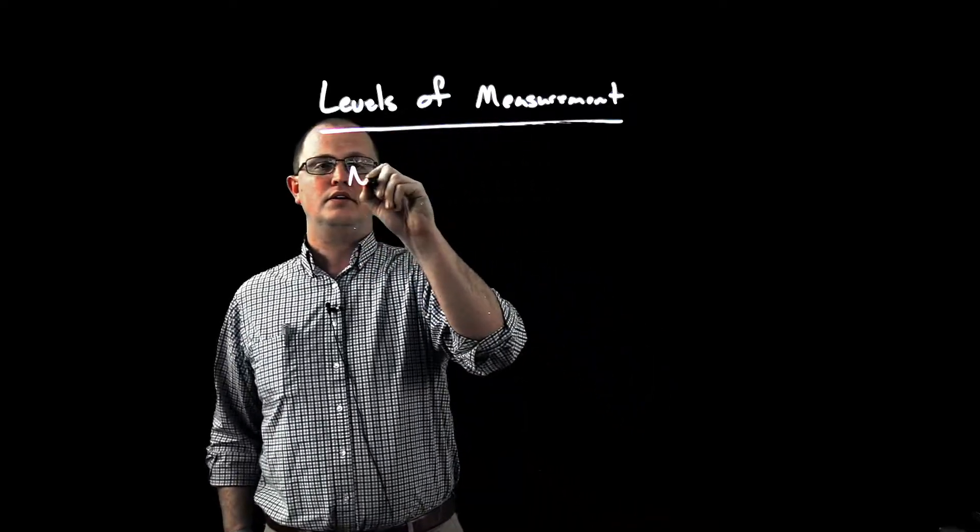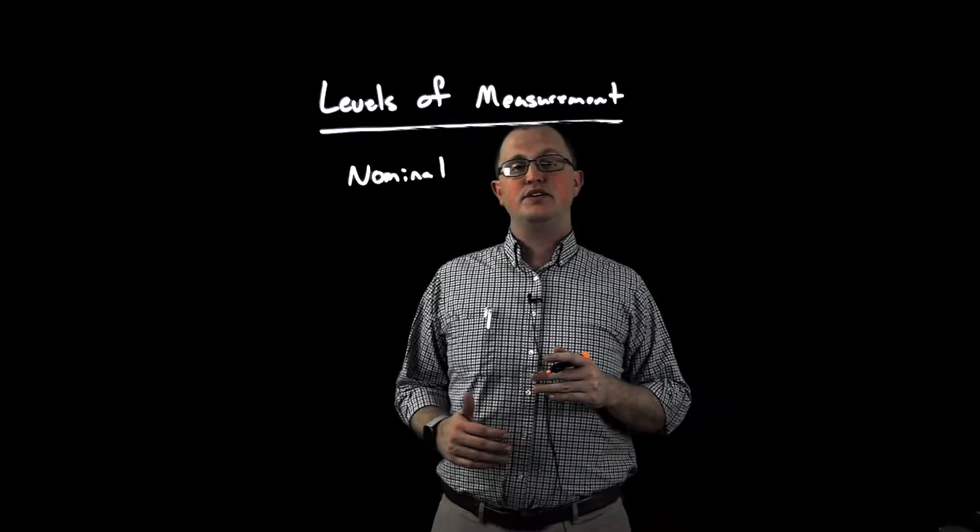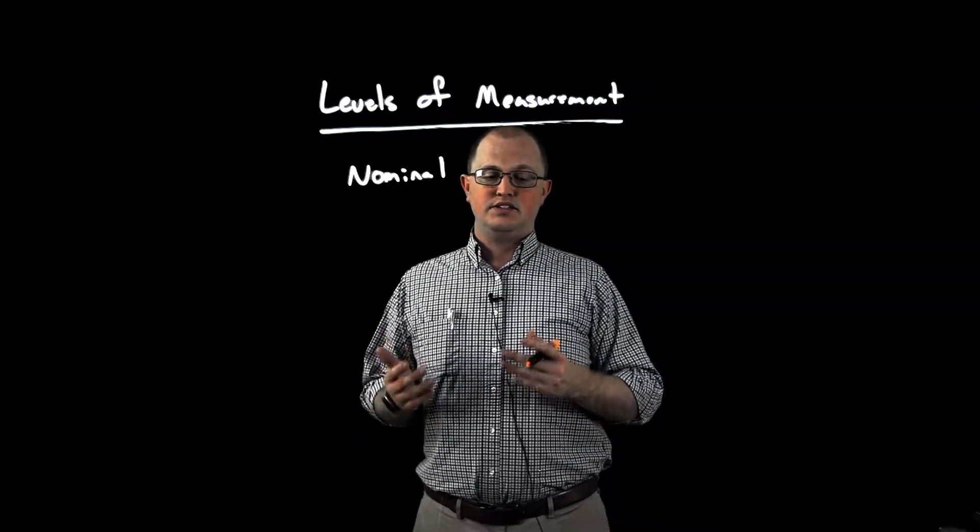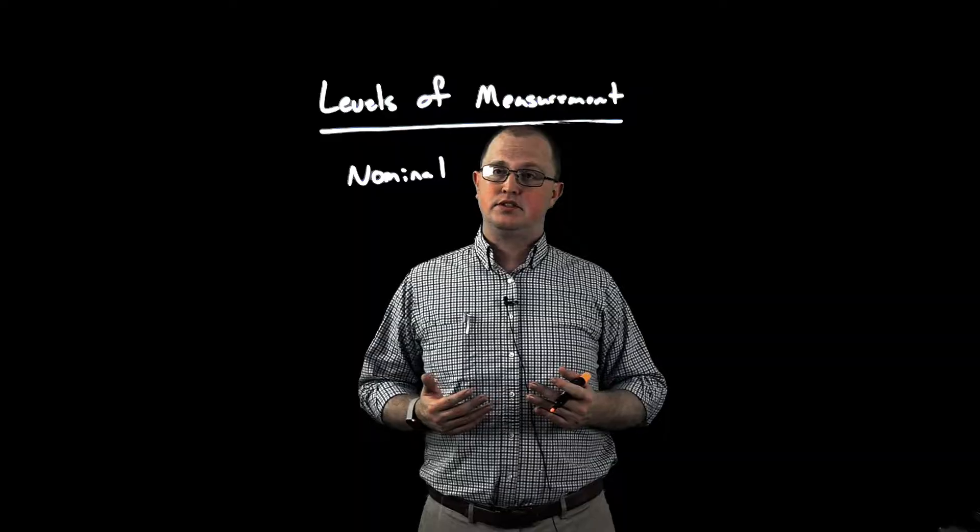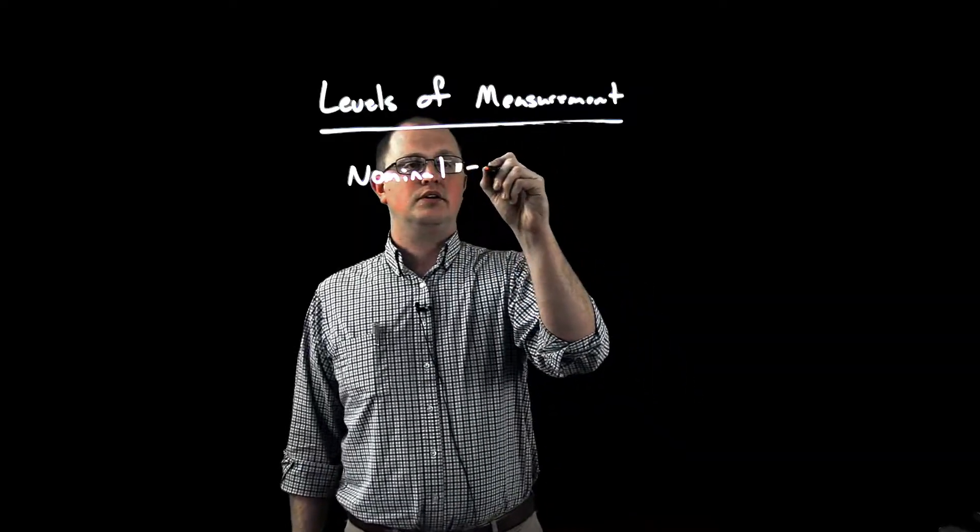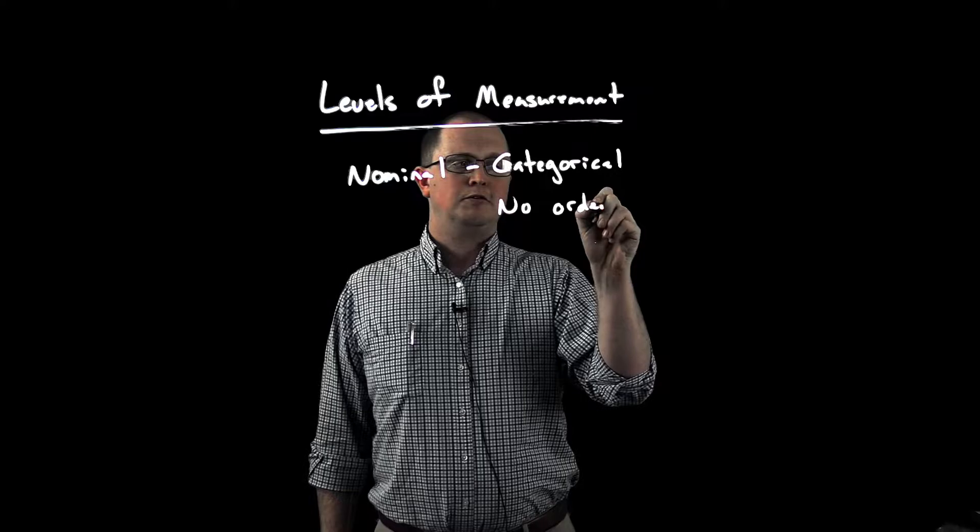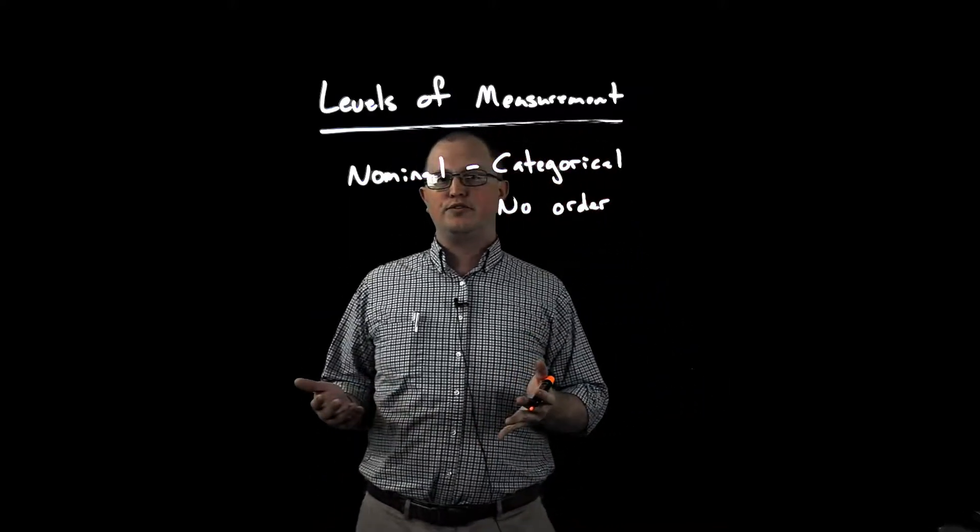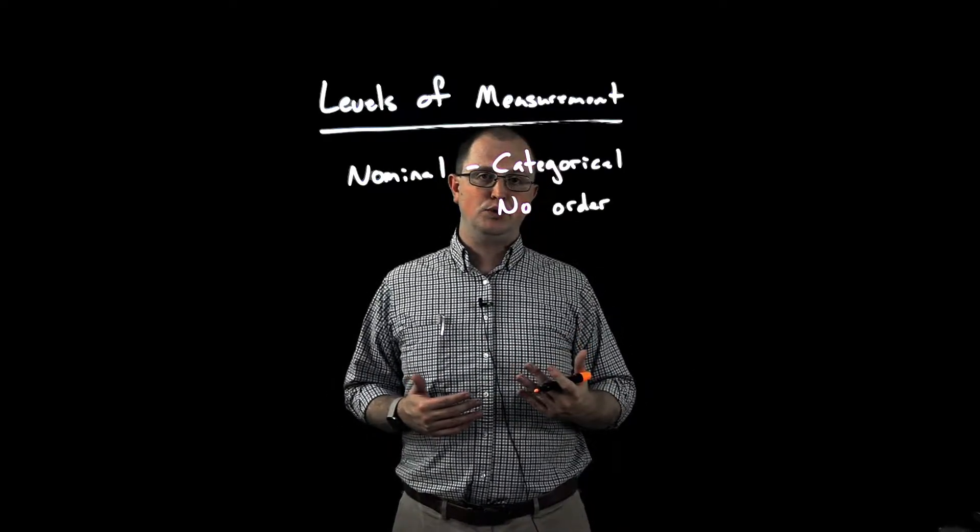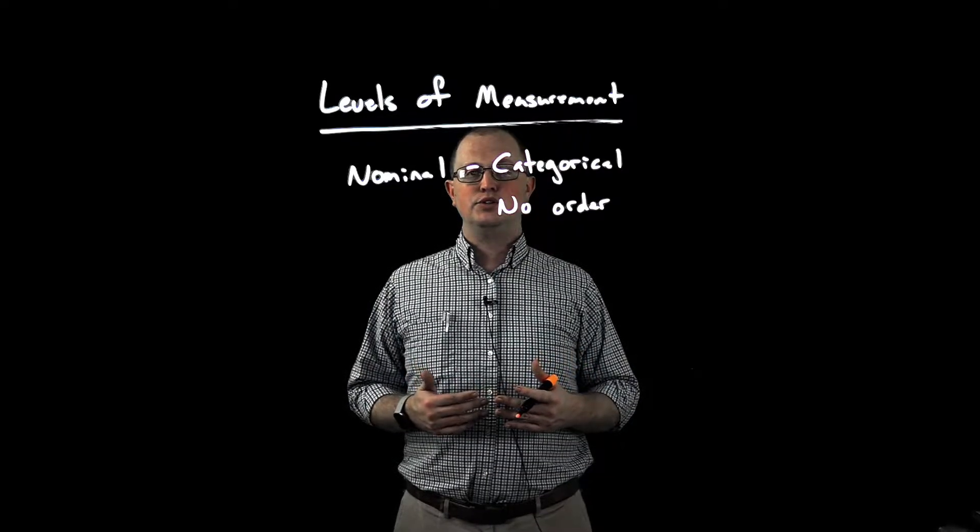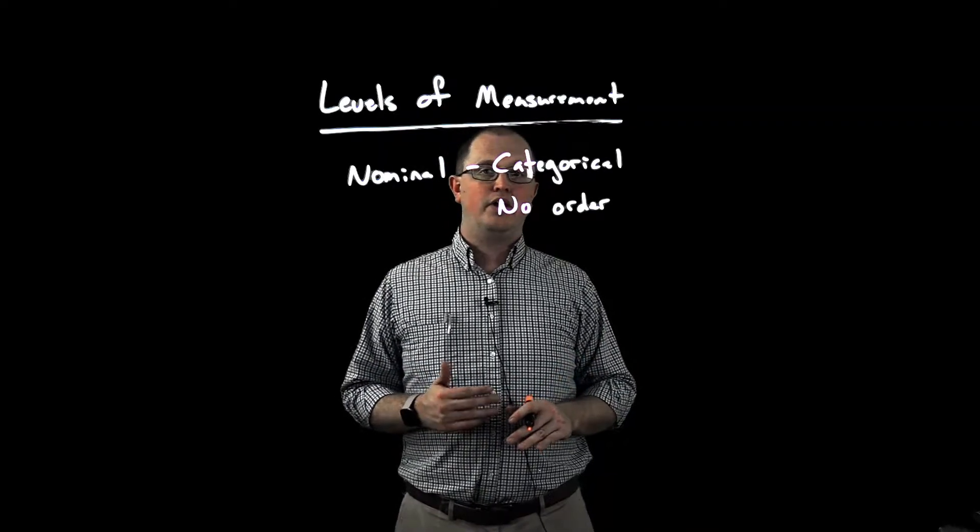The first is nominal data, and nominal data is basically your categorical data. You have different categories or answers or responses, and they're different, but we can't order them. So if we ask people to tell us what their favorite color is, we know that someone who says red is providing a different answer than someone that says blue, but we're unable to say that red is greater than blue or vice versa. So we have categories that are unorderable.